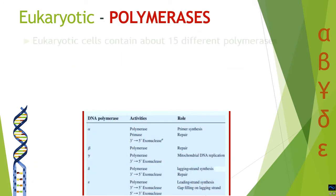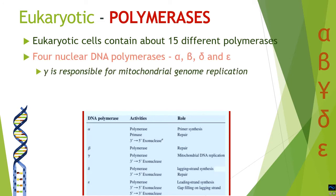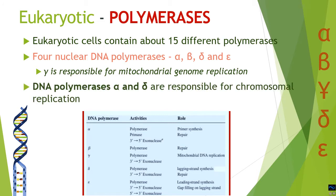In eukaryotic cells, 15 different polymerases have been discovered. Out of these 15, five are important in the replication process. Four of them — alpha, beta, delta, and epsilon — are nuclear and present in the nucleus where they replicate nuclear DNA, while gamma is responsible for mitochondrial genome replication. Alpha and delta are responsible mostly for chromosomal replication. The table compares the different polymerases present in eukaryotic cells — alpha, beta, delta, and epsilon are responsible for replication as well as repair functions.